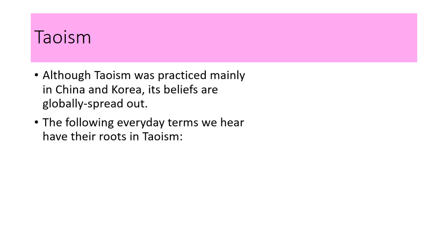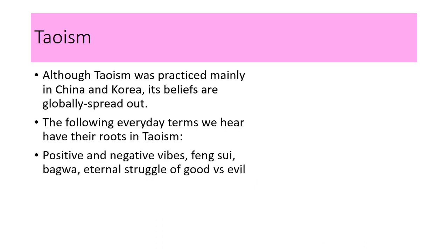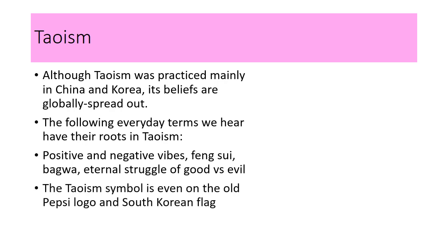Although Taoism was practiced mainly in China and Korea, its beliefs are globally spread out. The following everyday terms we hear have their roots in Taoism: the positive and the negative vibes are the yin yang, feng shui, bagua, and the eternal struggle of good versus evil. The Taoism symbol is even on the old Pepsi logo and the South Korean flag.